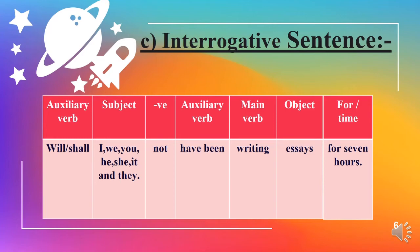Jab bhi fail mustakbilan mukamale jari ke suvalia jumle banane lagein: auxiliary verb will ya shall ko pehle layin, iske baad subject lagayin, aur phir 'not' lagayin. Ab doosra auxiliary verb 'have been' lagayin, aur iske baad verb ki pehli form aur -ing lagayin jiasse 'writing.' Iske baad object lagate hain jiasse 'essays,' aur phir 'for' aur time lagayin jiasse 'for seven hours.'